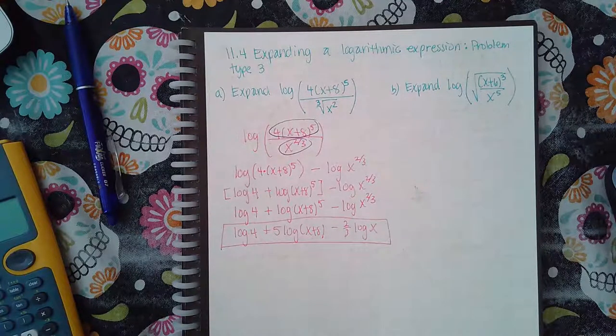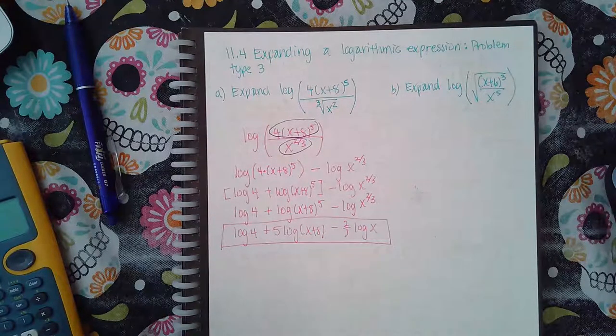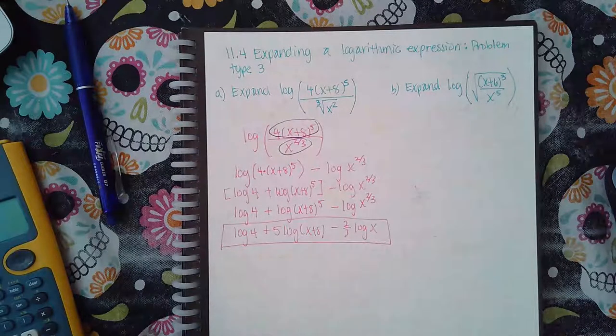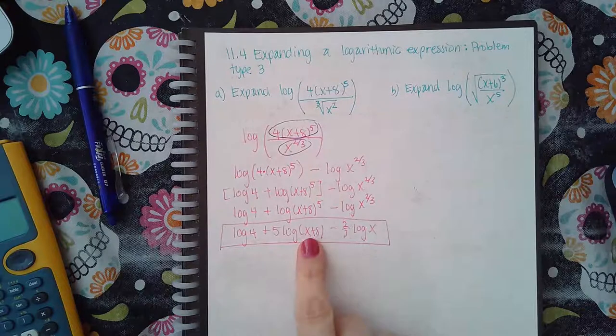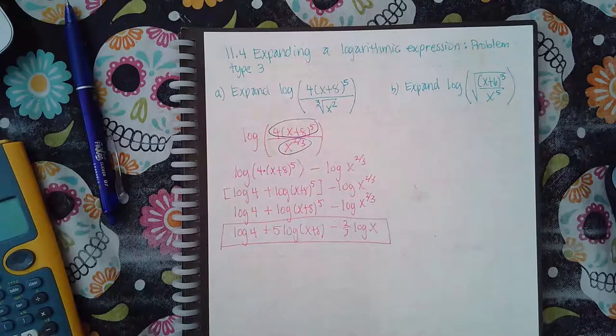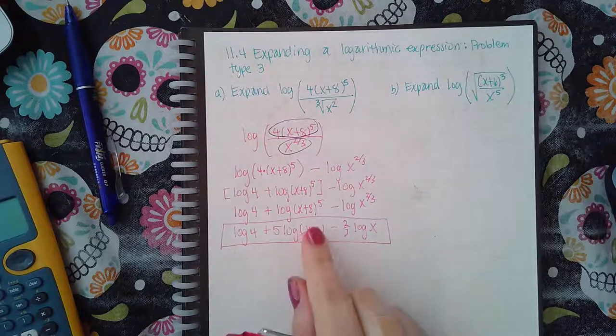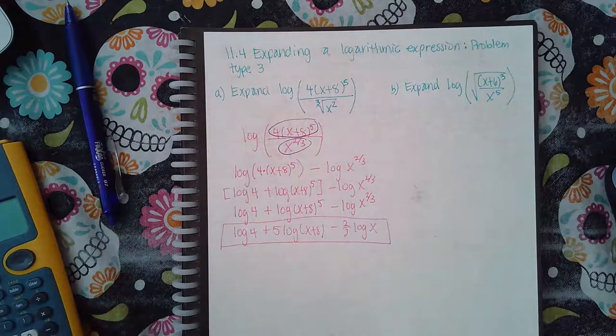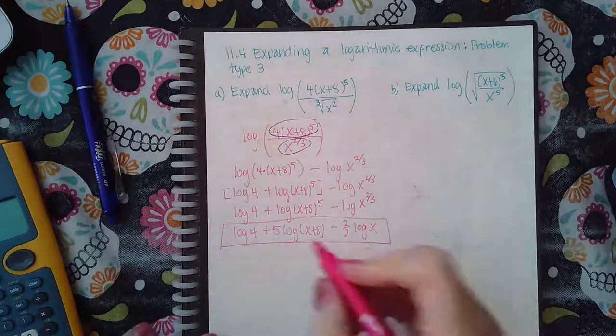This one does have a sum of the arguments but there is no property that will allow you to separate the logarithm of a sum. You cannot expand this. If you try to expand that you're magically doing something, and I say magically because there's no rule that allows you to do that, so you'd just be making up stuff at that point.